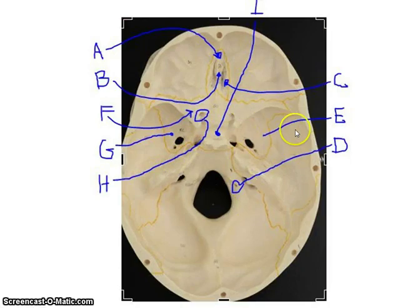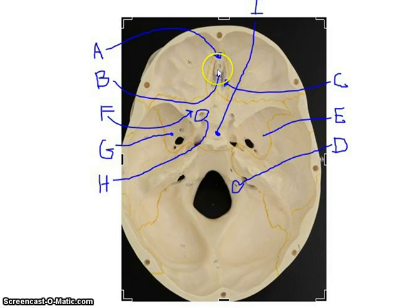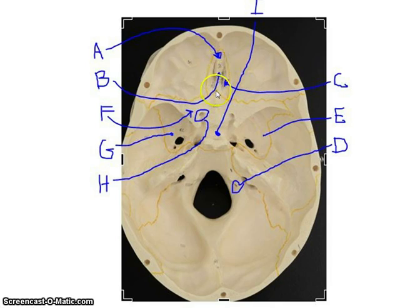Here we're looking inside the skull. The bones present are the temporal bone, occipital bone, sphenoid bone, frontal bone, and ethmoid bone. Looking at the ethmoid bone: when we looked at the front of the face, we could see the perpendicular plate of the ethmoid bone. Here and here are the cribriform plates of the ethmoid bone, and the center ridge is called the crista galli.